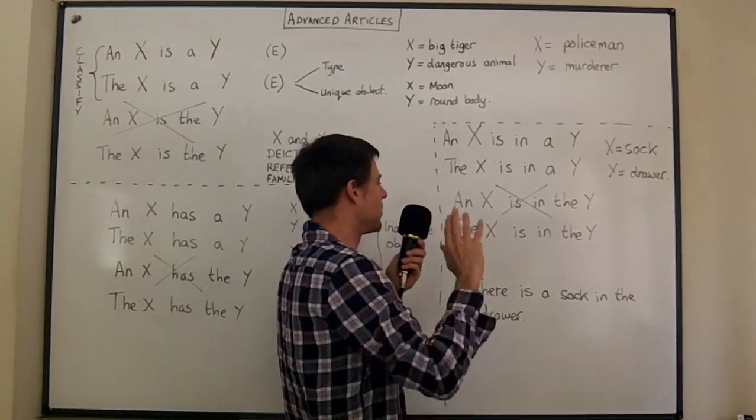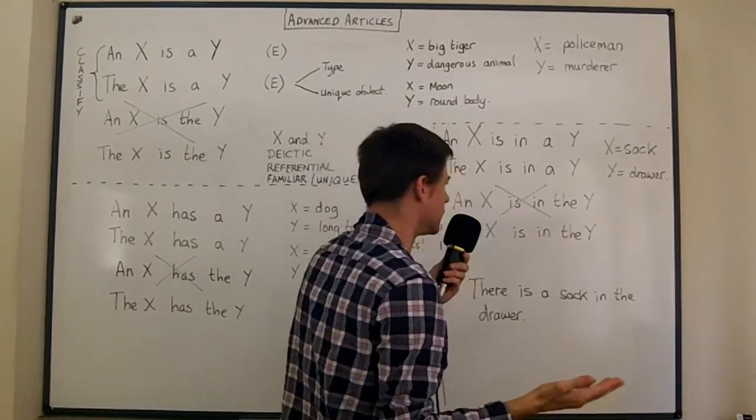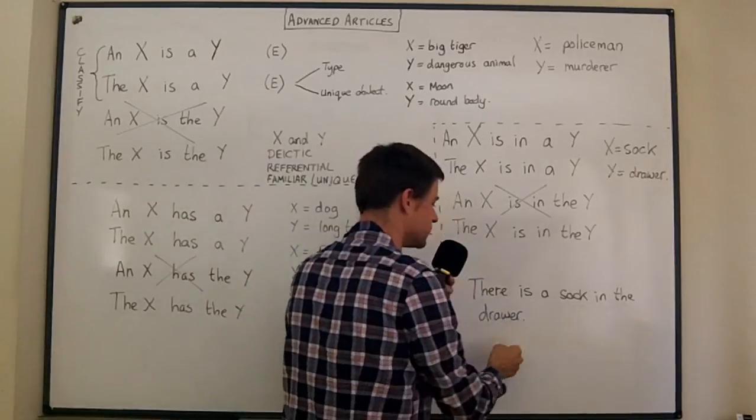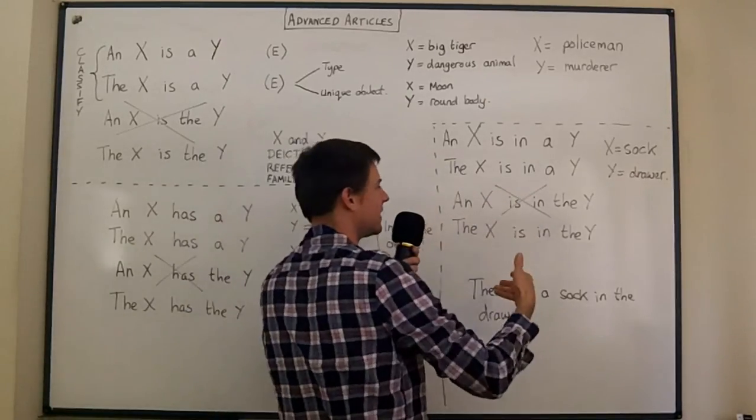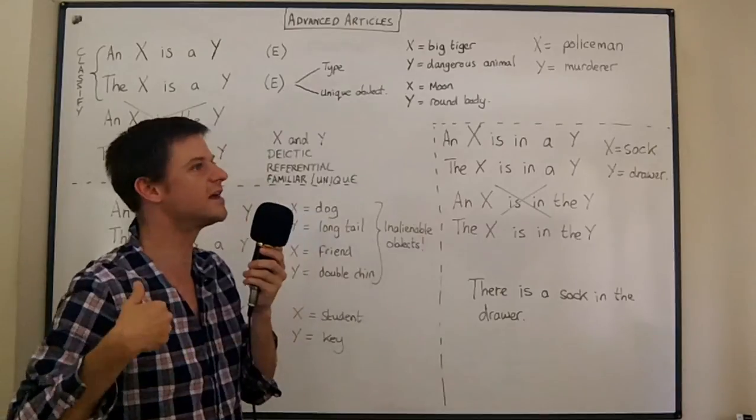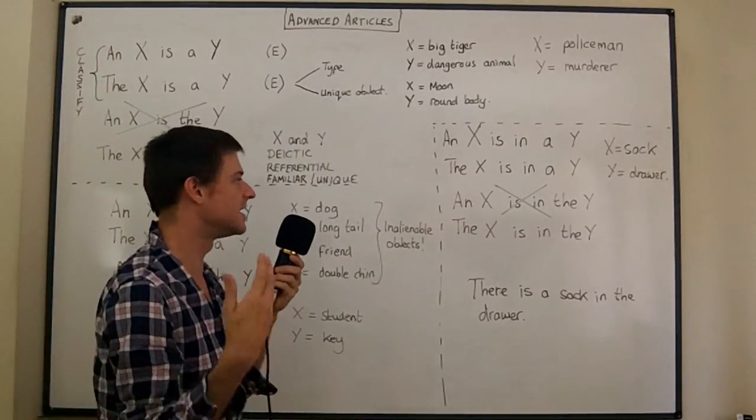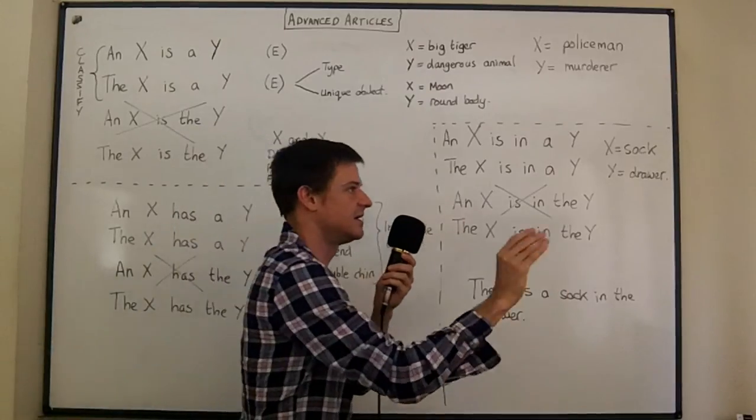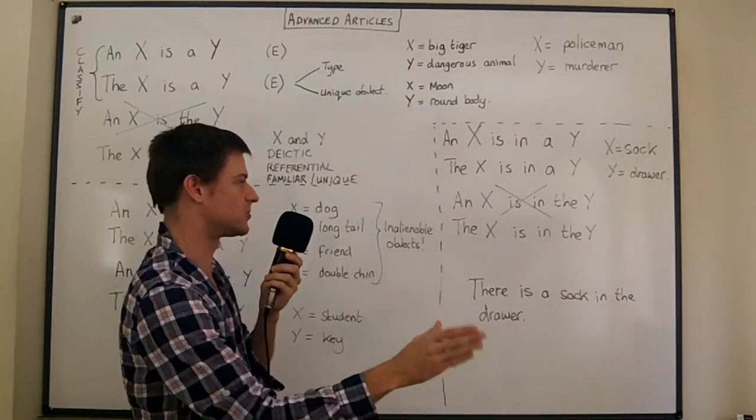Well people are very unlikely to say a sock is in the drawer. They will usually say there is a sock in the drawer. They won't usually say a sock is in the drawer. They'll say there is a sock in the drawer if we're just talking about a general idea of a sock in a very concrete place, in a drawer which we know about.